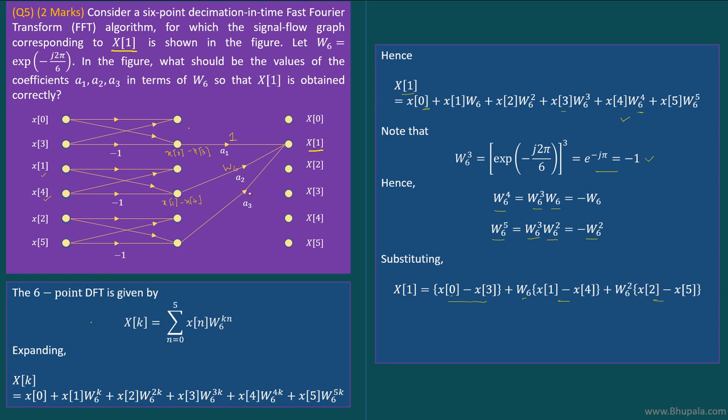Similarly, the last term is X(2) - X(5) multiplied with W6^2. So here we got X(2), here we got X(5), so here this would be equal to X(2) - X(5). And this fellow should be multiplied with W6^2 to get our complete X(1). And hence...